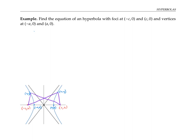That difference equals 2a. Here's why: if I take my point to be a vertex, its distance to the nearer focus is (c − a), since c is bigger than a. The distance to the farther focus is a + a + (c − a). Taking the difference: a + (c − a) + a − (c − a), which simplifies to a + c − c + a, giving 2a.